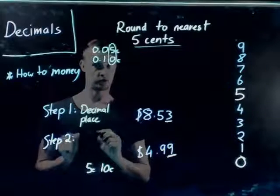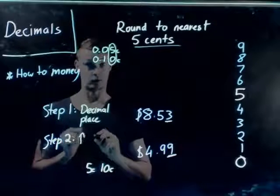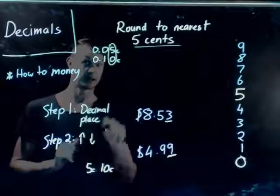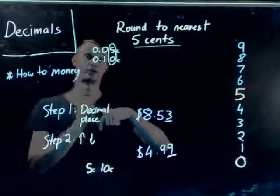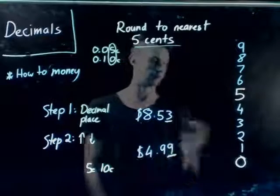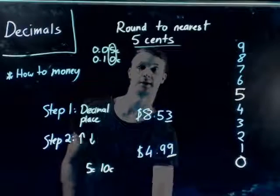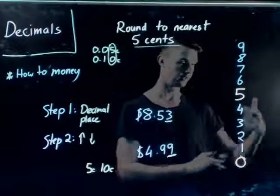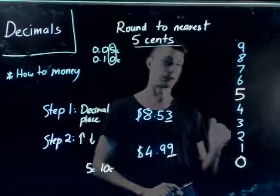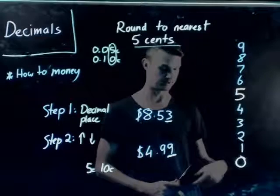Step two is slightly different from what we've been doing previously. You need to work out whether the number is going to round up or round down — it's either going to move up to the nearest five cents or down to the zero cents. Looking at our number chart, we're going to separate this into whether we round up or down. Between zero and five we have four numbers that indicate whether they move to the zero or to the five.